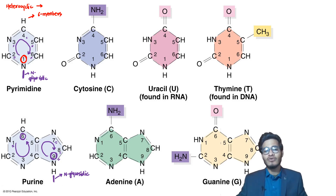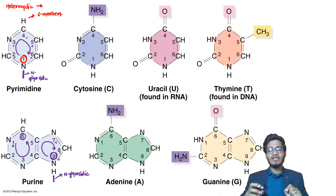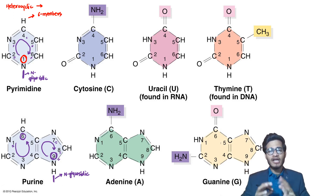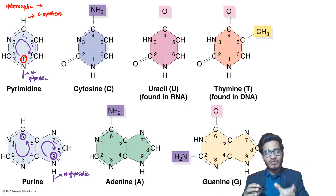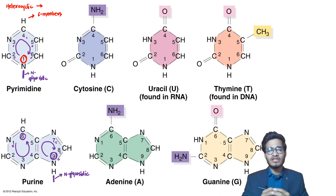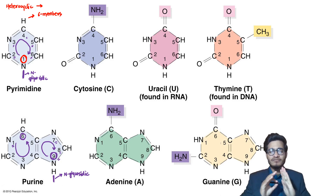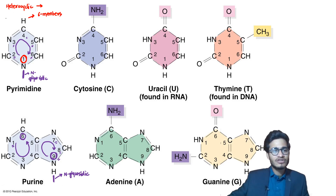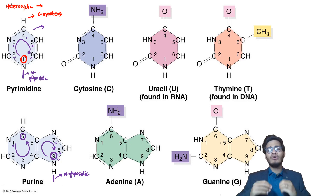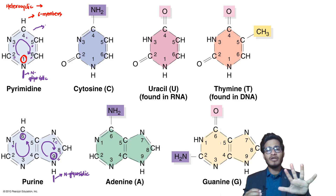So to summarize: pyrimidine's N1 and purine's N9 form the glycosidic bond. In pyrimidines, clockwise counting starts with 1 at the bottom. In purines, 7, 8, 9 are in the clockwise direction in the imidazole ring. For nitrogen placement, the rule is: on every odd number position, nitrogen is present — except position 5. So add nitrogen at all odd numbers except 5.